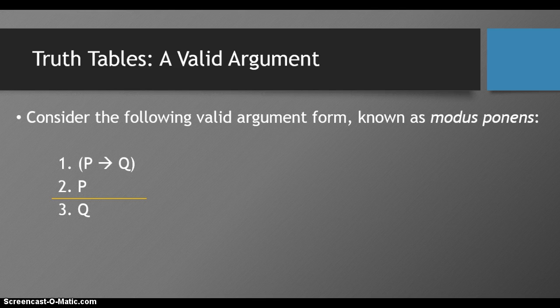Consider the following valid argument form, known as modus ponens. Premise 1: if P, then Q. Premise 2: P. Conclusion: Q.